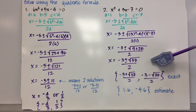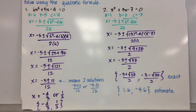And again, that represents two exact solutions. Negative 3 plus the square root of 37 over 2 and negative 3 minus the square root of 37 over 2. And that would be fine for an exact answer.